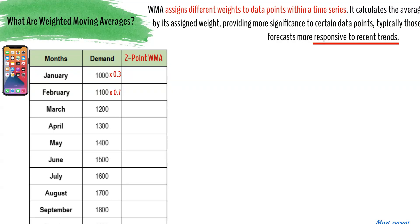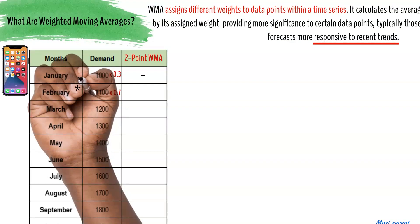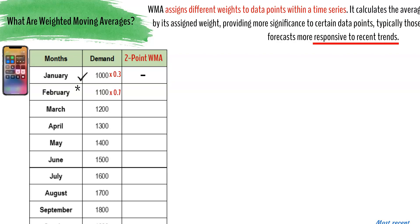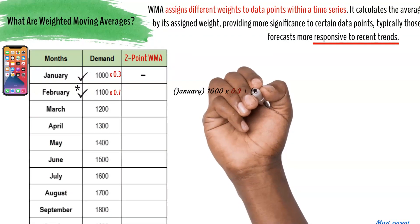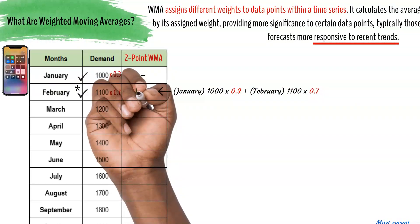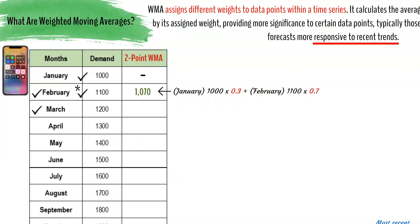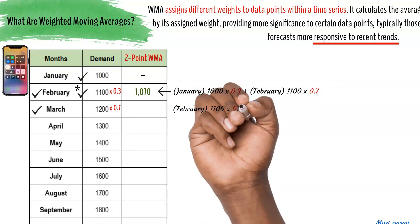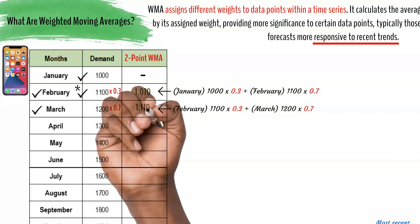To calculate the two-month weighted moving average, we start from February, as there is no prior data before January. We assign 0.3 to January's demand of 1,000 and 0.7 to February's demand of 1,100, giving a weighted moving average of 1,070. For March, we assign 0.7 to March's demand of 1,200 and 0.3 to February's demand of 1,100, giving 1,170. For April, we multiply 0.3 by March's demand of 1,200 plus 0.7 by April's demand of 1,300, giving a value of 1,270.